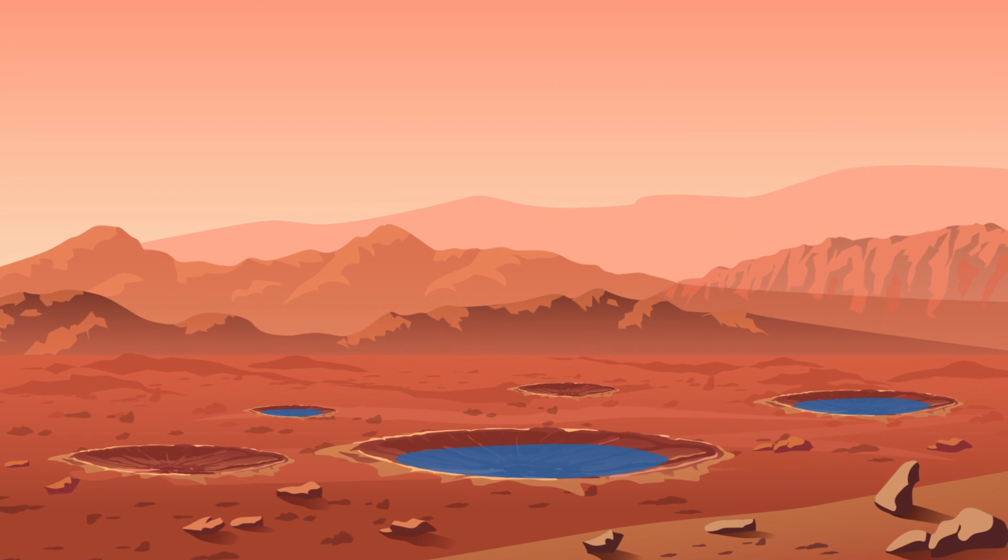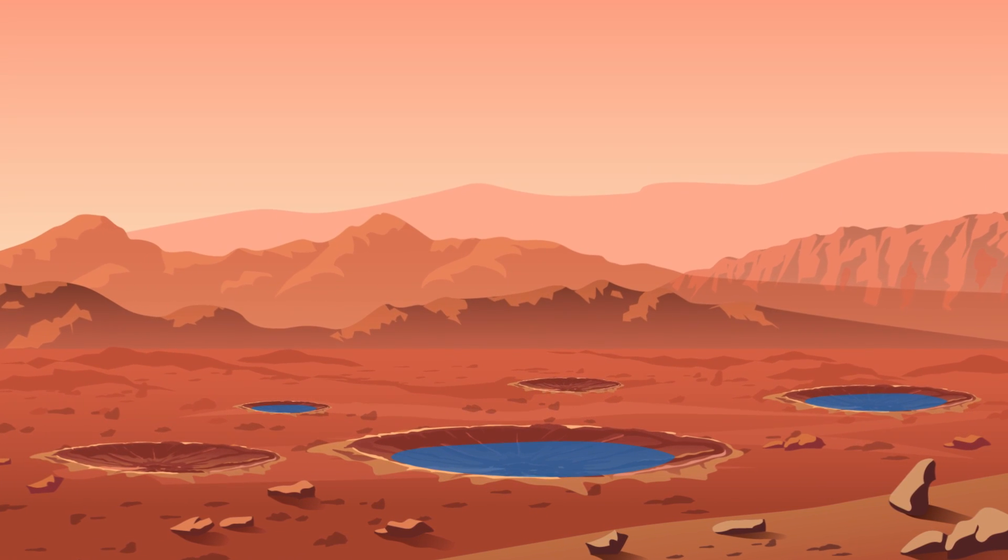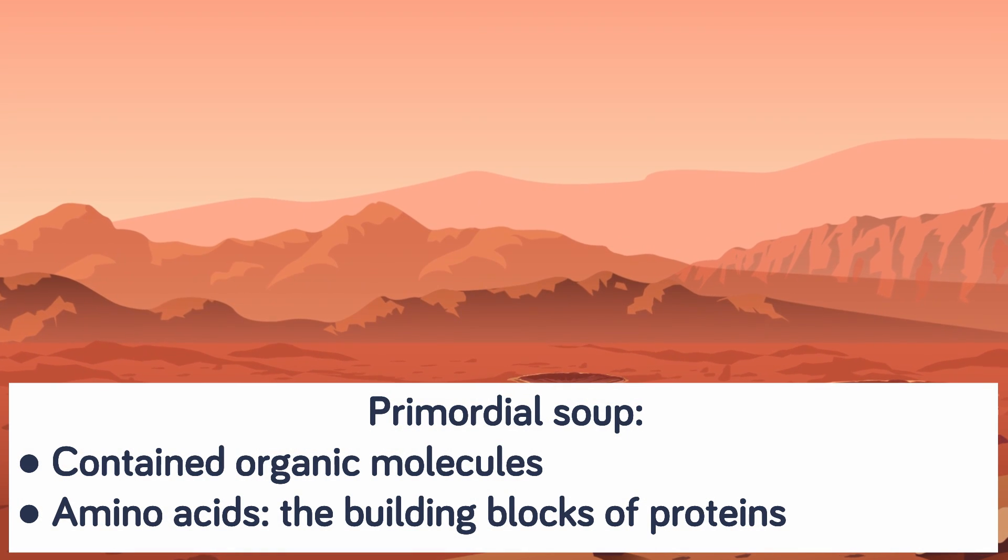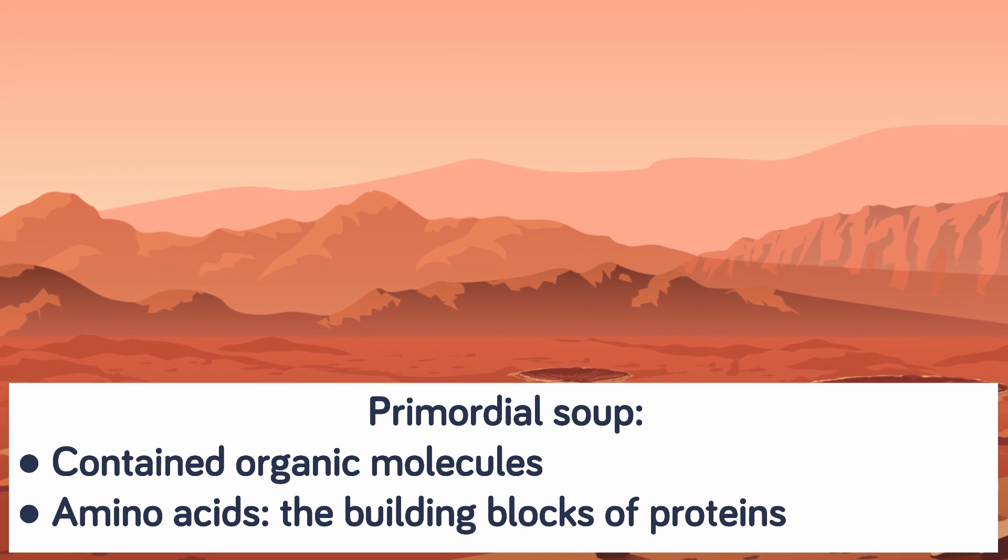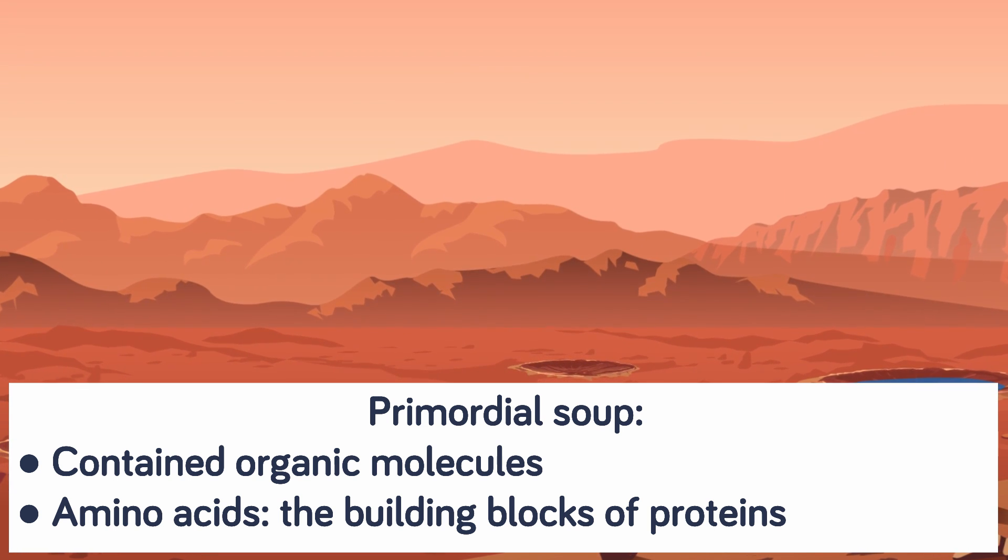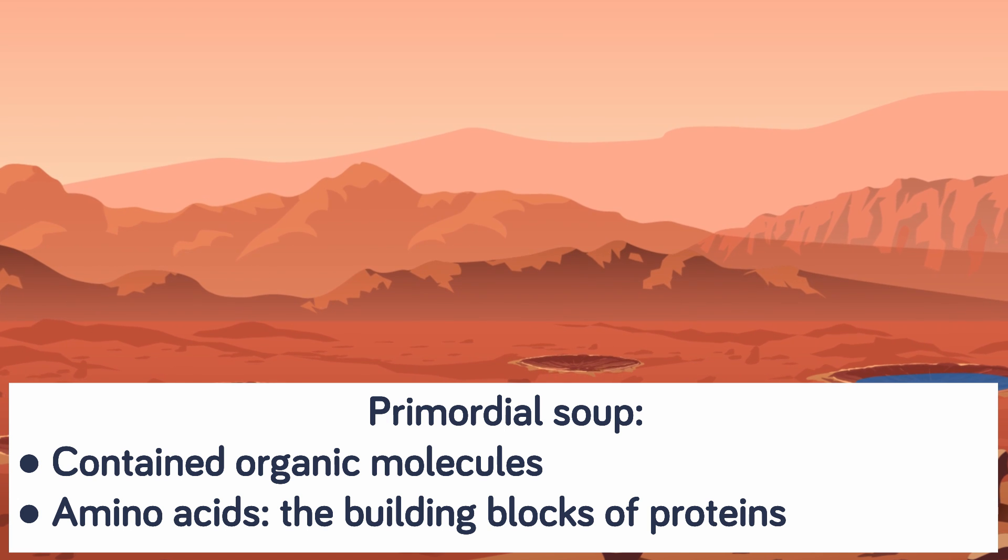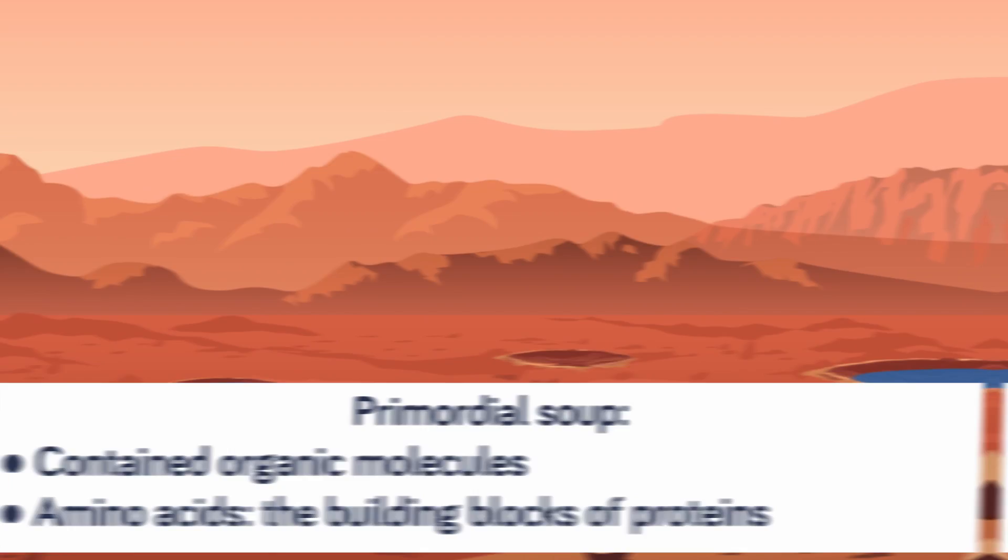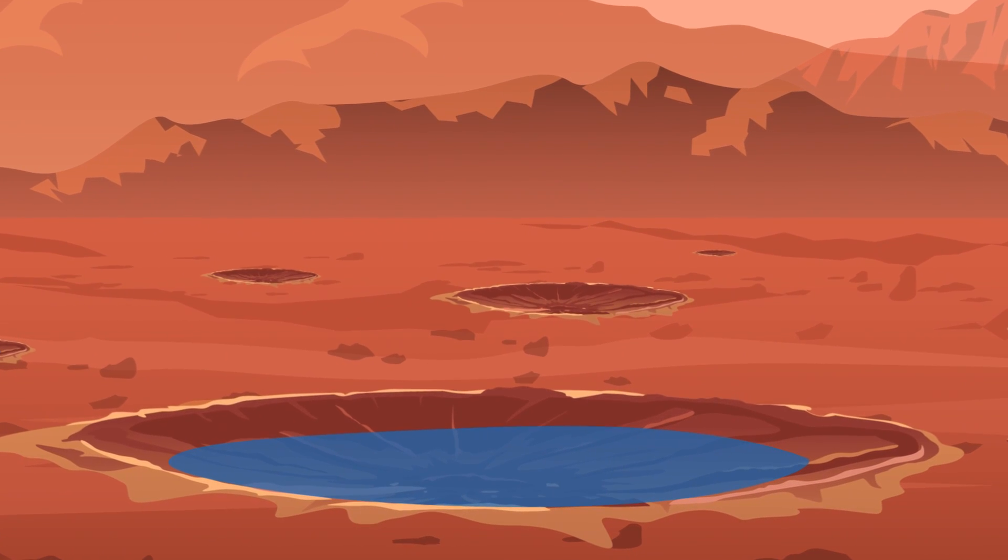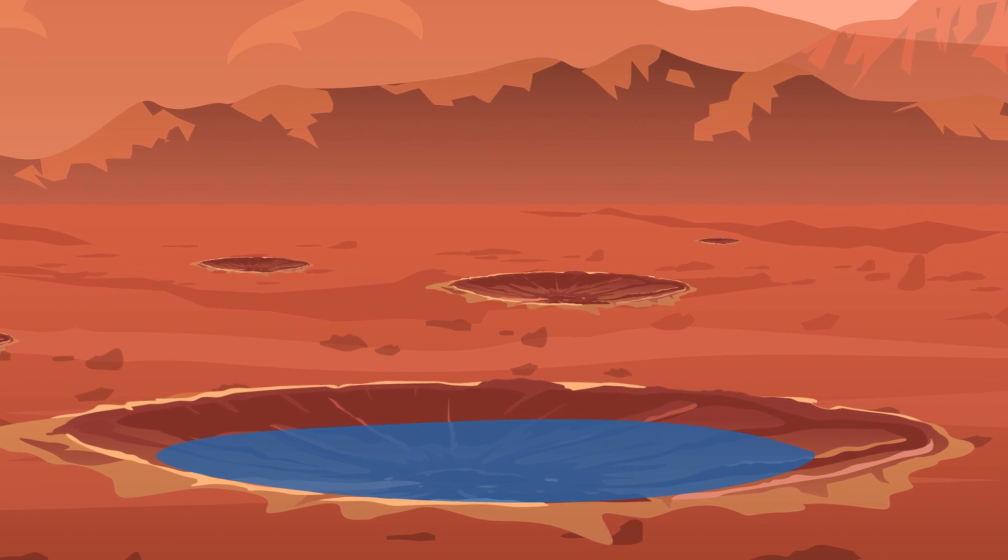Some theories state that life on Earth started in something referred to as the primordial soup. This soup contained organic molecules, and those include amino acids, which are the building blocks of proteins. There are plenty of theories as to how life got there, but scientists agree that the soup was left in the pan for many millions of years, and eventually complex life forms were created.